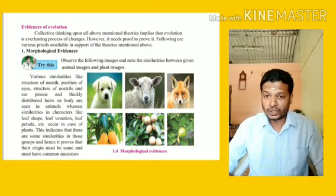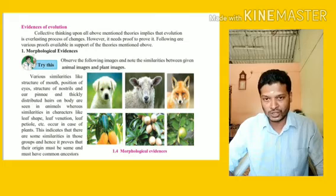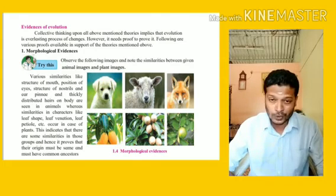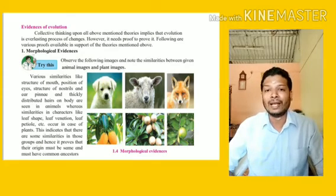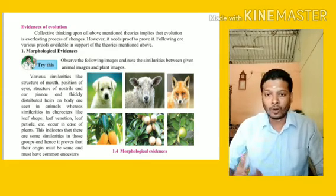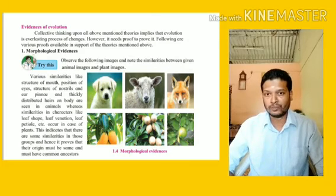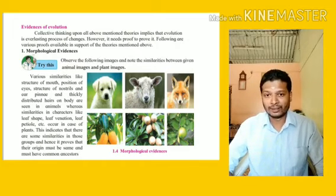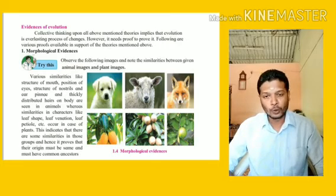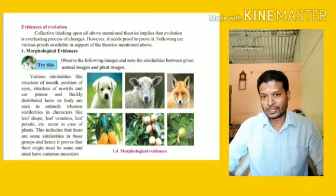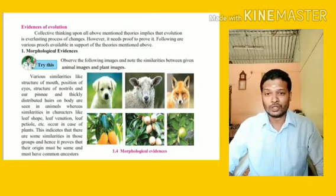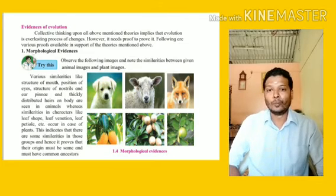Same way, you can see in your textbook the pictures of different plants — I think mango, chiku, and one more plant are shown. Though these plants have different characteristics and bear different types of fruits, they still have similarities in their leaf structure and growth pattern. So we can say these organisms are related or have evolved from a common ancestor. This was the first evidence: morphological evidence.